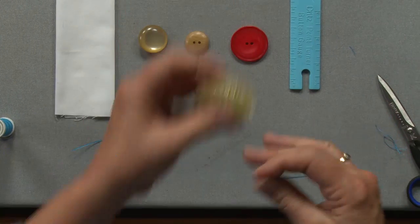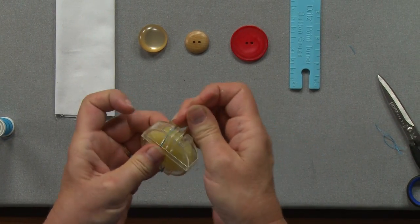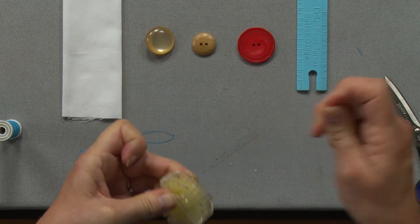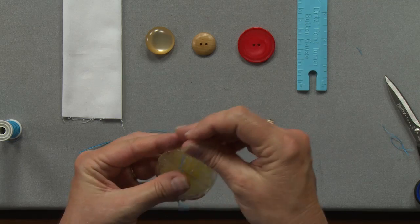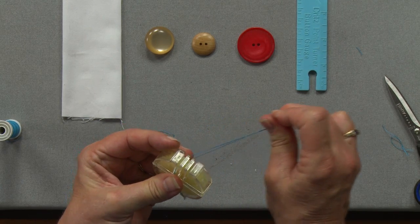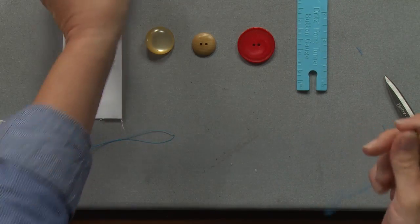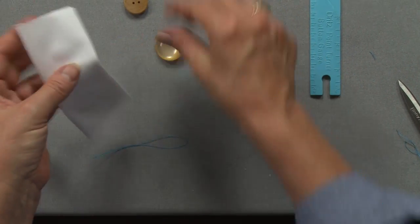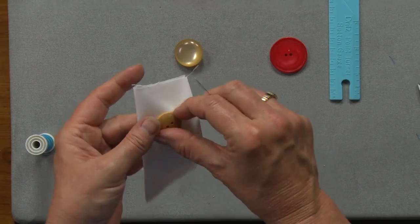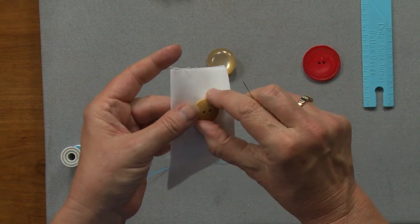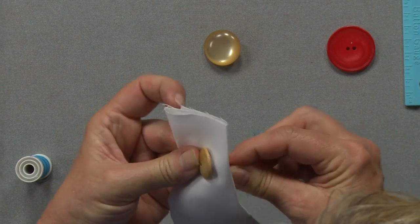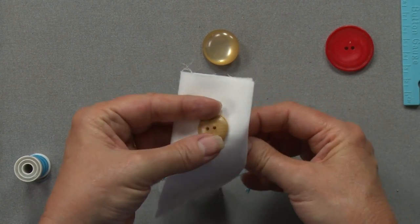I want to make sure I run it through some type of thread conditioner. My favorite is beeswax, and what this will do is keep it from knotting, tangling, or breaking.